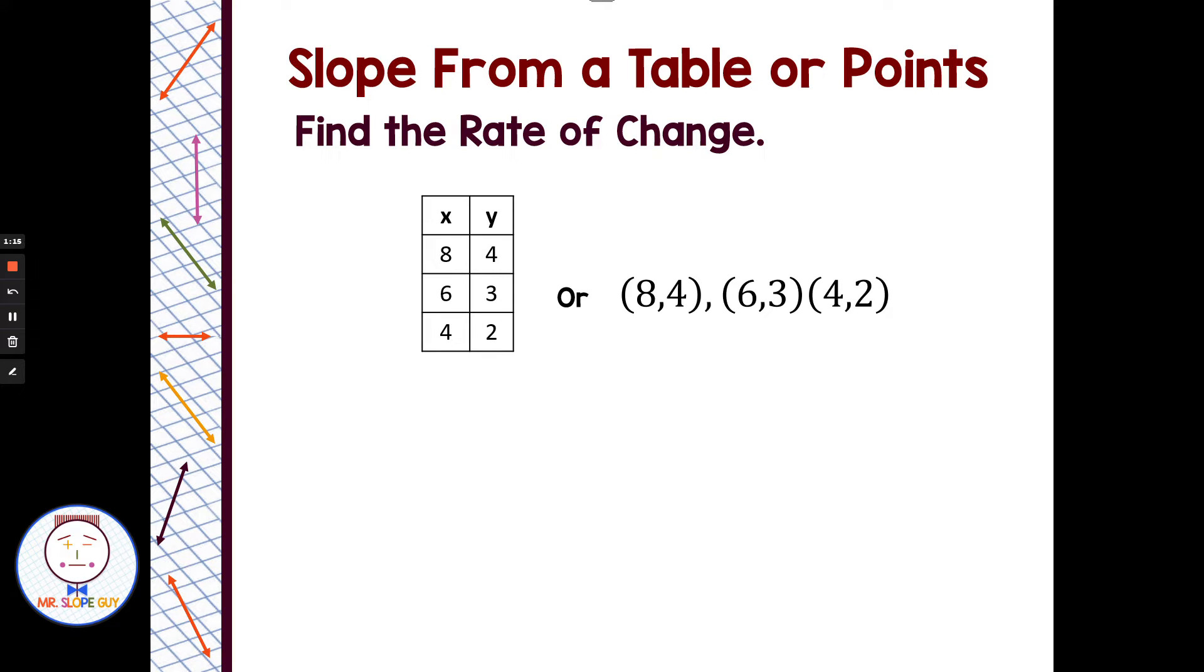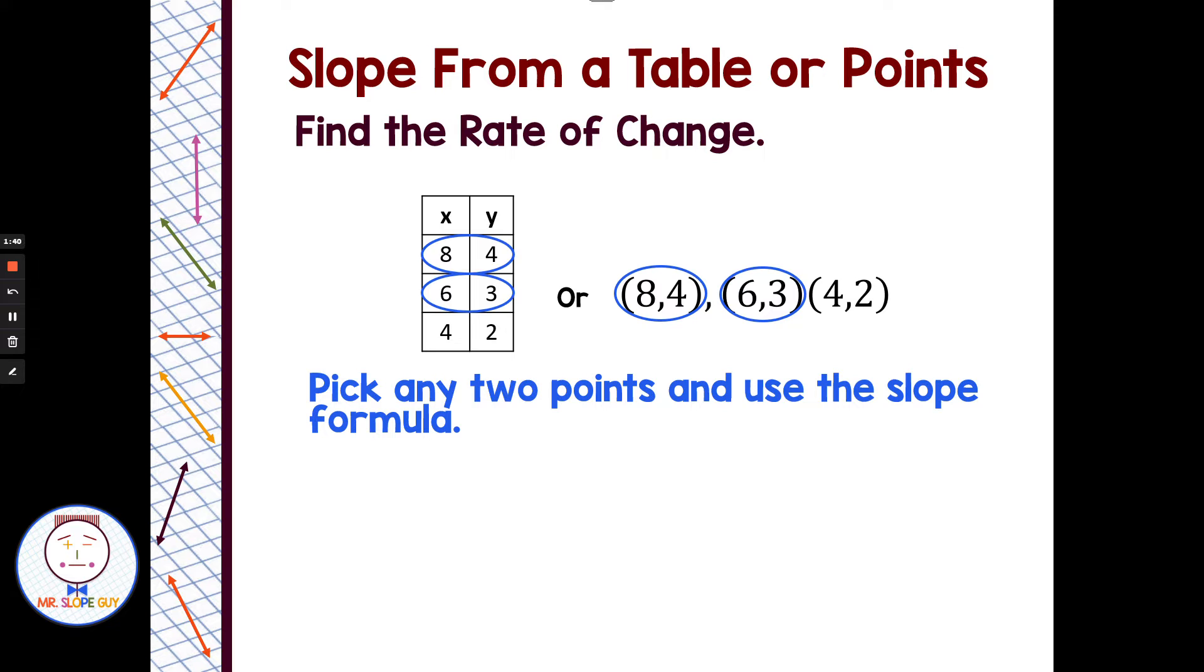Any 2 points on a line will give you the same slope. So we just pick any 2 of these points and put them in the slope formula. I normally pick the first 2. You might want to stay away from negatives if those mess you up. I would pick (8,4) and (6,3).